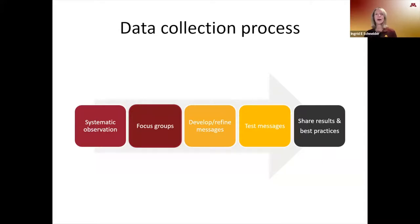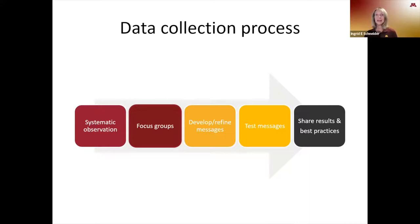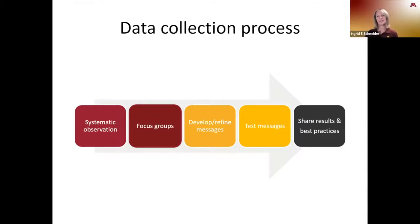In our augmented reality approach, users point a mobile device camera at an item with a QR-like code, and once connected, they interact with virtual images in a real-world context through audio, video, and other graphics. These messages will be tested through an experiment where samples of anglers are randomly assigned to a control group, a photo group, or an augmented reality group, and we'll compare their intentions to perform preventative behaviors.